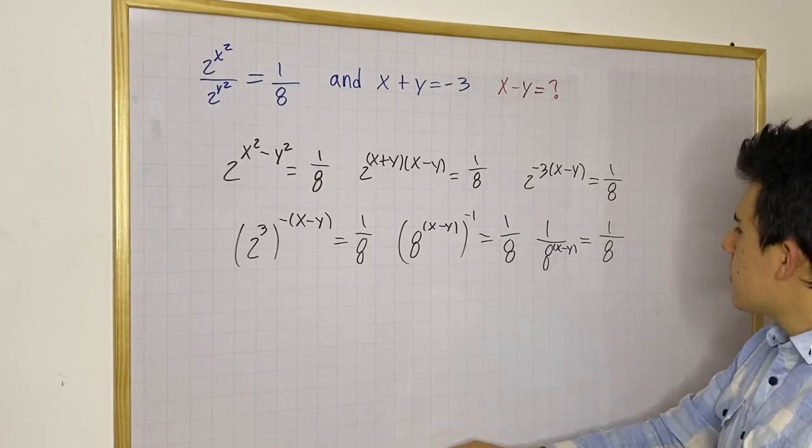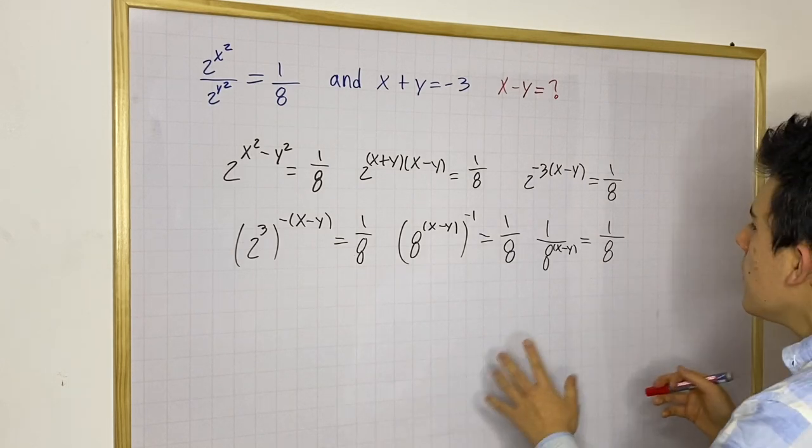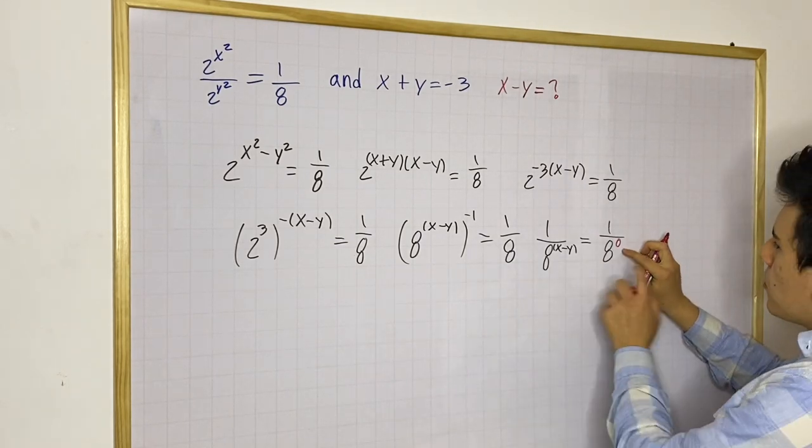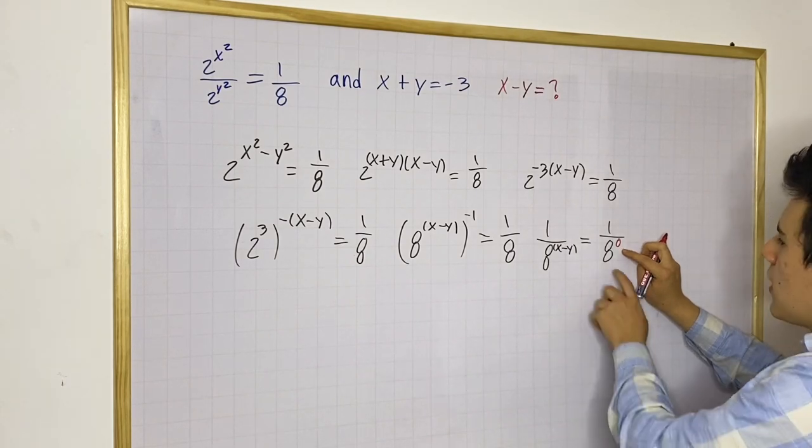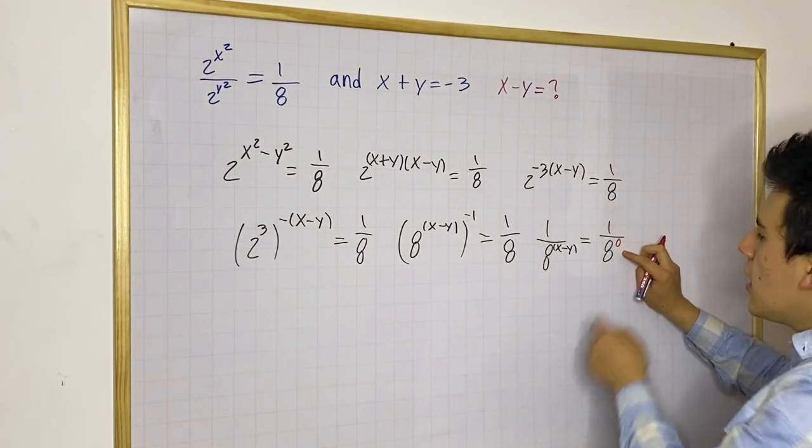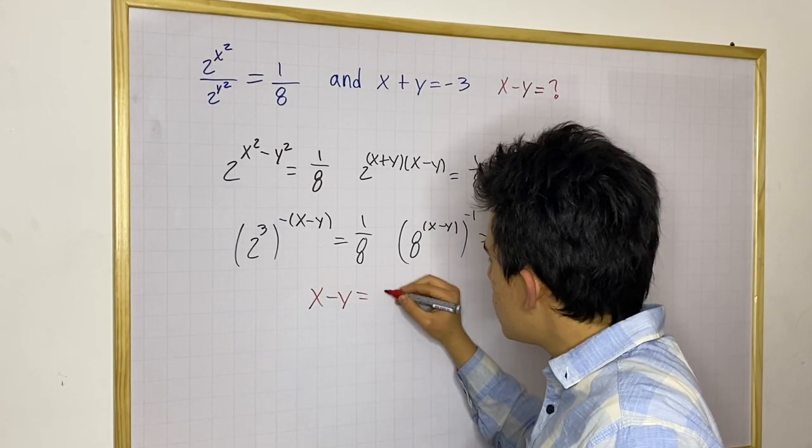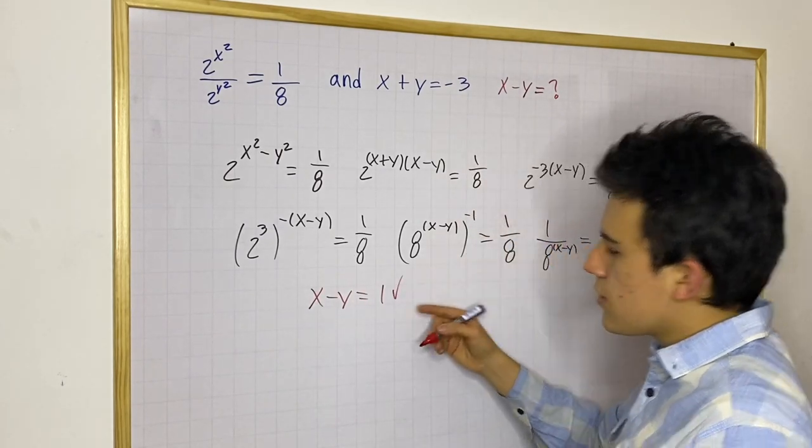Now, if we want to find x minus y, the only thing we need to do is to see the exponent that we have up here. We know that it's just simply 1 because we have 8 to nothing, and that's just 1. So that means that x minus y is equal to 1. And this is the answer we're looking for.